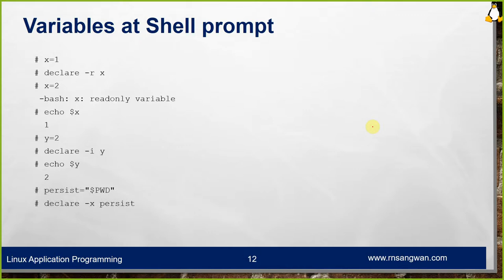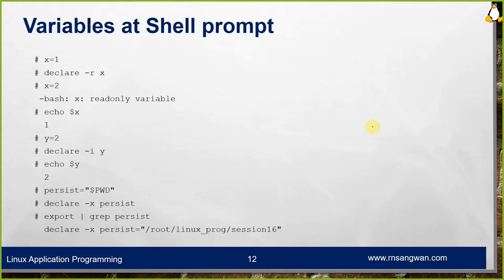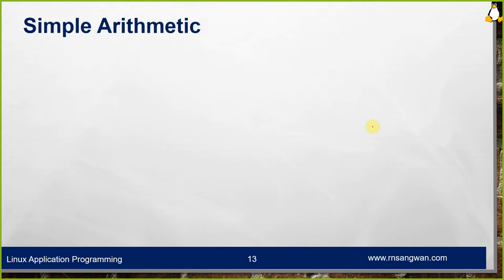persist=$PWD assigns the present working directory to the variable persist. declare -x persist exports it. You then get the value of the persist variable — the current working directory path. To make a variable an environment variable, add the export keyword before the declaration, like export X=1 or export X=2.